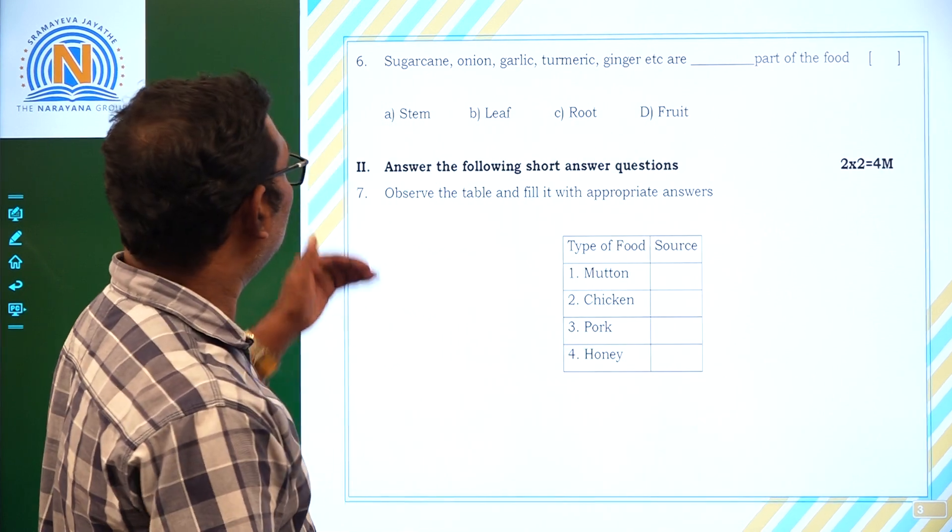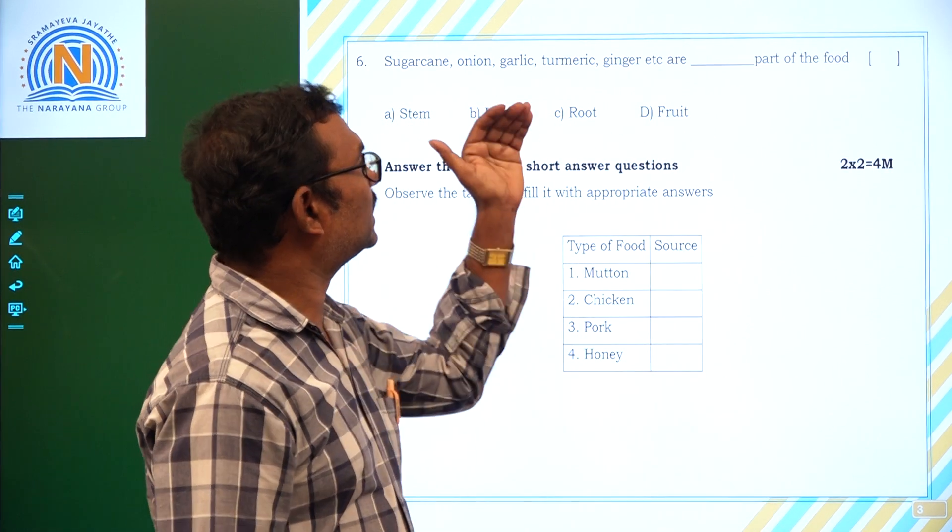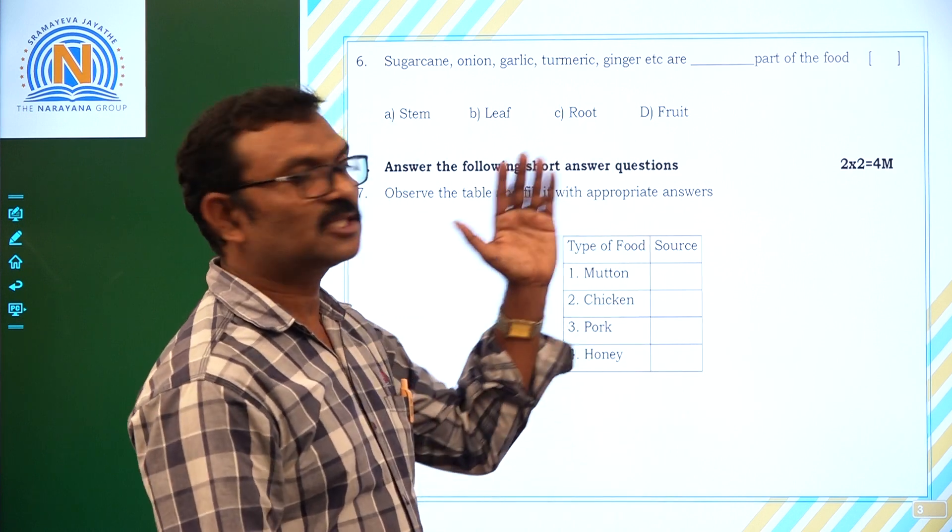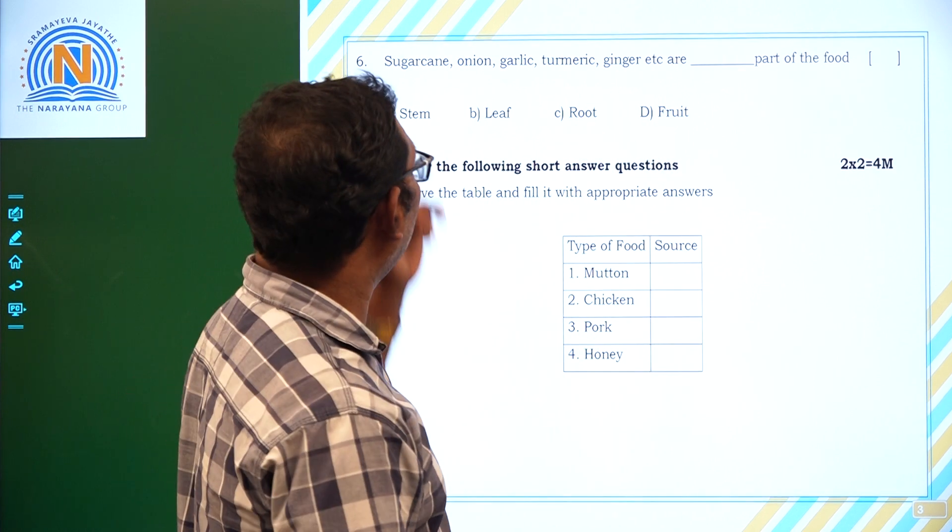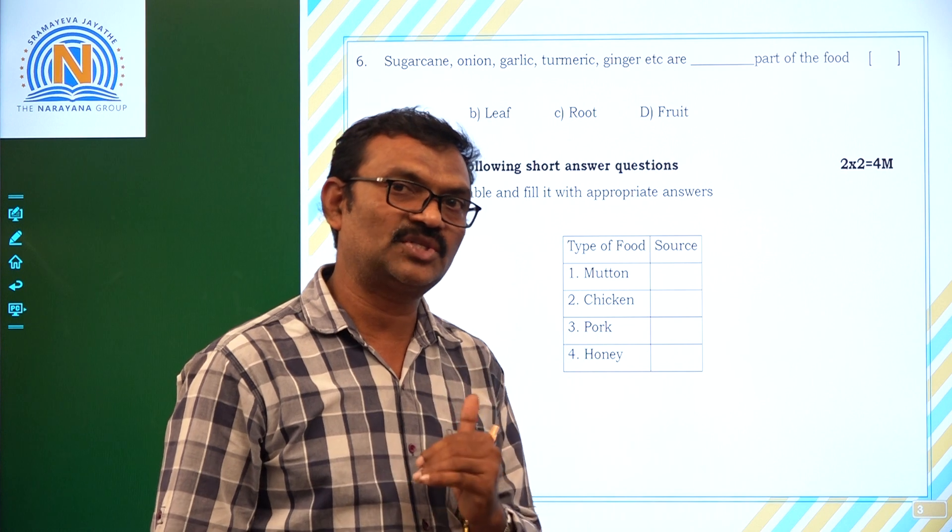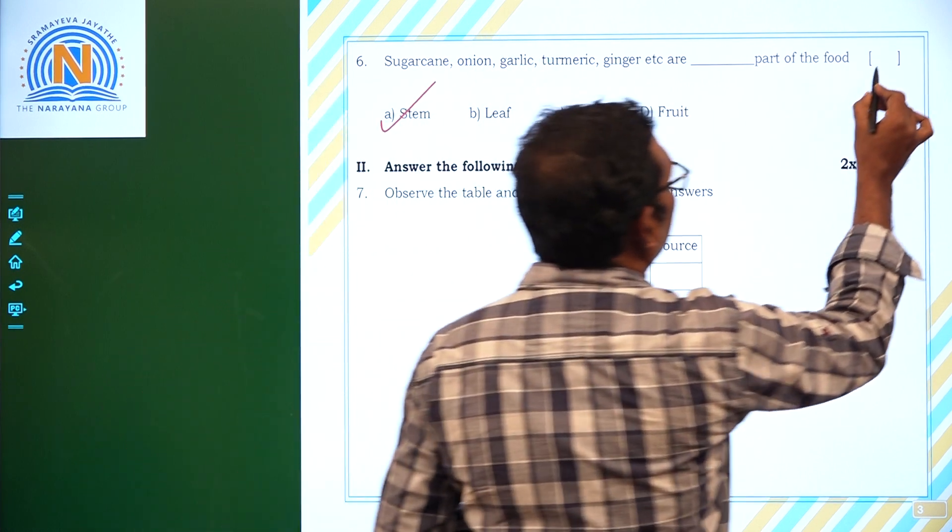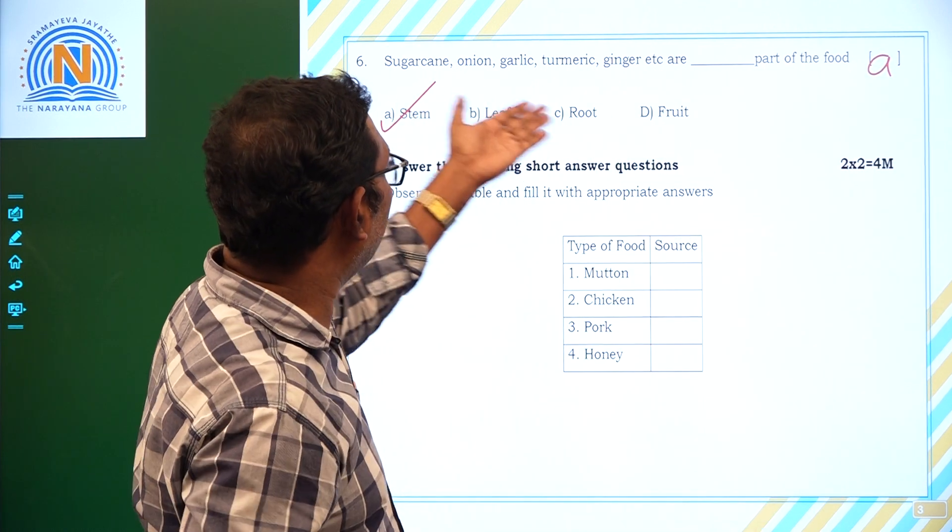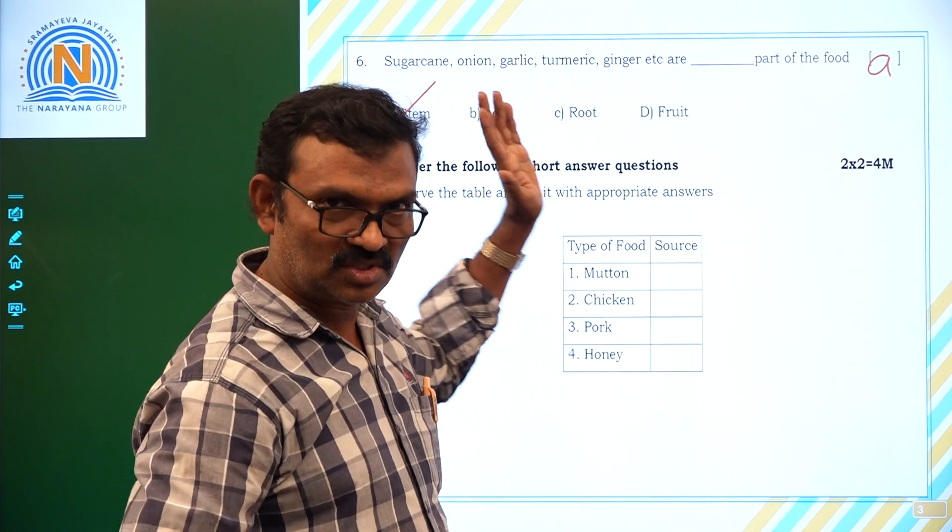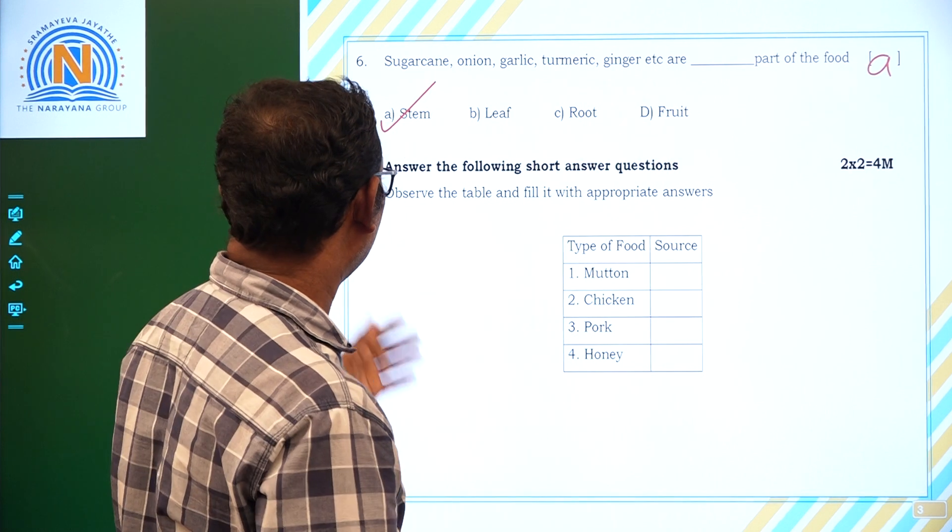Next, sixth one. Sugarcane, onion, garlic, turmeric, ginger etc. are the dashed part of the food. Sugarcane, have you ever eat sugarcane? Yes, it is nothing but stem only. Yes, option A. These are all stem materials. Onion also stem, garlic also stem, turmeric, ginger etc.